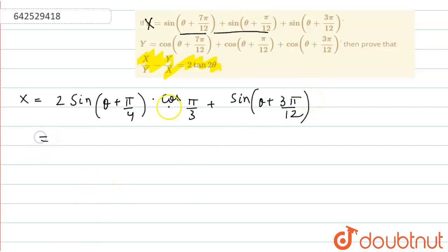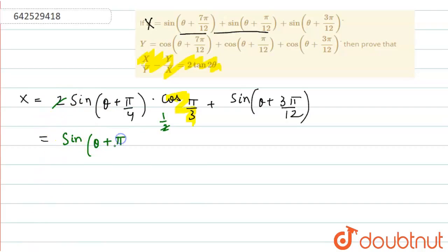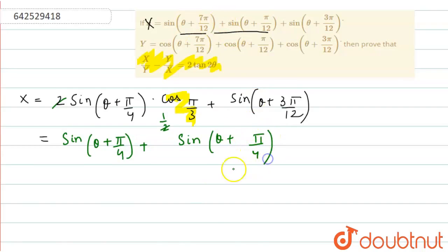Now, cos(π/3) is half, and the 2 will be cancelled. So we get sin(θ + 5π/4) plus sin(θ + 3π/12). Now, 3π/12 is π/4, which equals 5π/4. So what we get is x is equal to 2sin(θ + 5π/4).